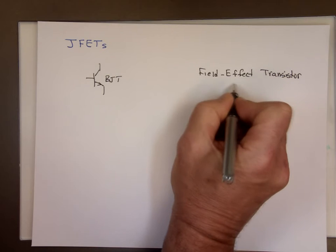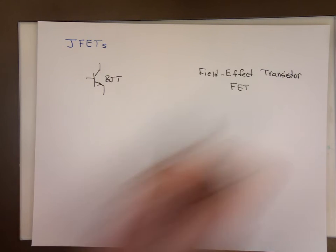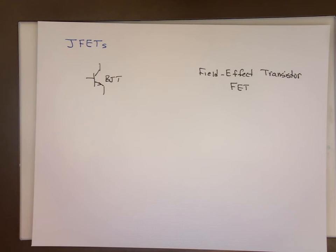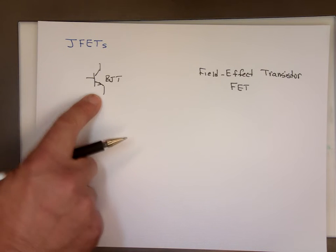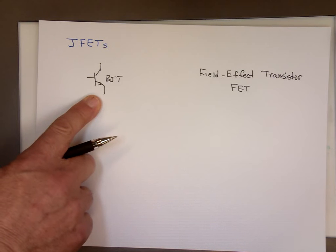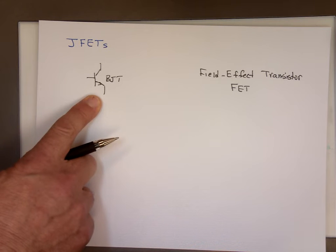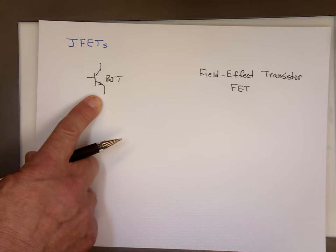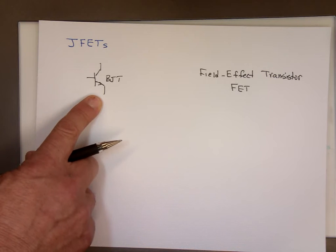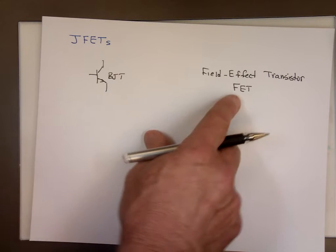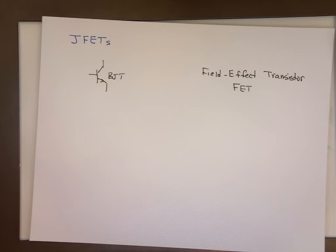We call it FET. This is not a bipolar — it's a unipolar transistor because it only depends on one type of charge, either free electrons or free holes. Now, BJTs are most common in linear applications and are actually the preferred devices in linear applications. But there are a few cases in linear applications where the FET is actually better or better suited.